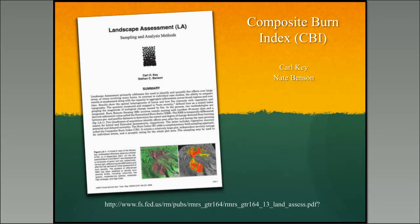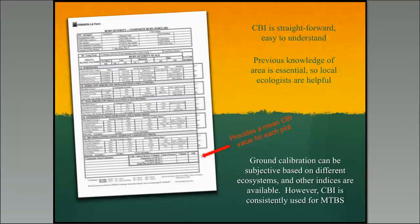The publication describes how you do your field validation using an index called the Composite Burn Index, or CBI. The CBI is pretty straightforward and easy to understand. Nate and the team were unable to accompany us in the field, but we felt like we had a pretty good idea of what they wanted us to do, and afterward found out we did everything right. Previous knowledge of the area is pretty helpful and essential — if you can take somebody familiar with the area before the fire, they'll tell you what it looked like then. If you don't have previous knowledge, you can rely on unburned areas and include that in your sampling regime.